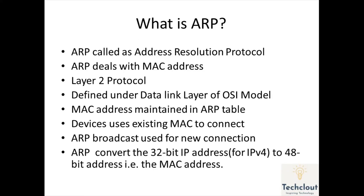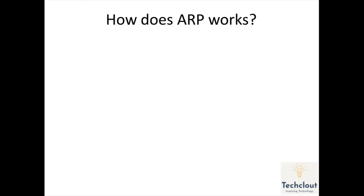ARP converts the 32-bit IP address to the MAC address. The IP address is 32 bits and the MAC address is a 48-bit address. Now let's see how ARP works.